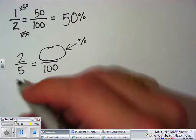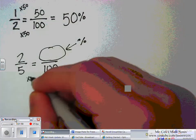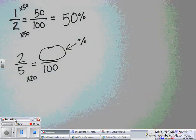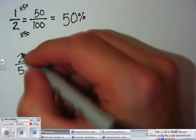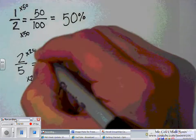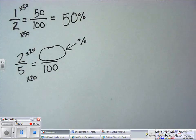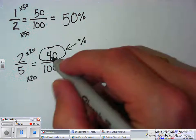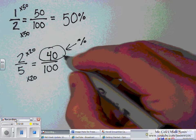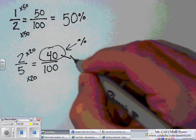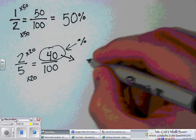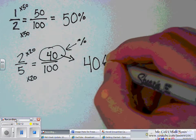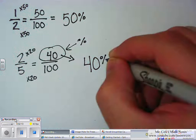5 times 20 is 100. 2 times 20 is 40. So I can take my numerator here, extract that out, and I would have 40%.